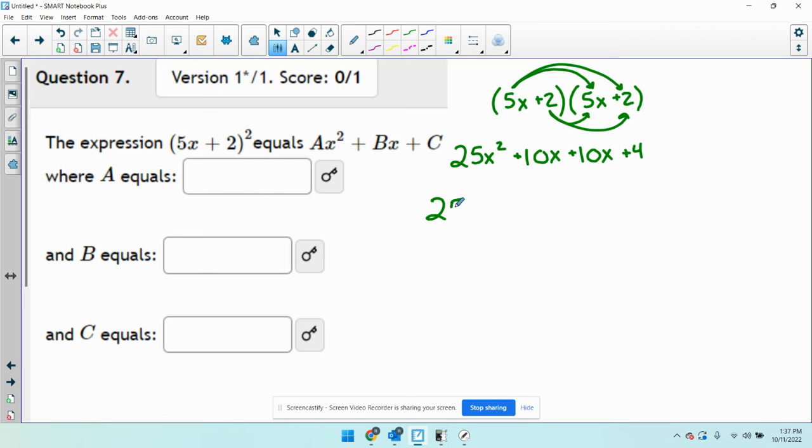So we have, when I combine like terms, 25x squared. 10x and 10x is 20x plus 4. So the a is just going to be the number in front of the x squared. The a here is going to be 25. The b here is going to be 20. And the c here is going to be 4.